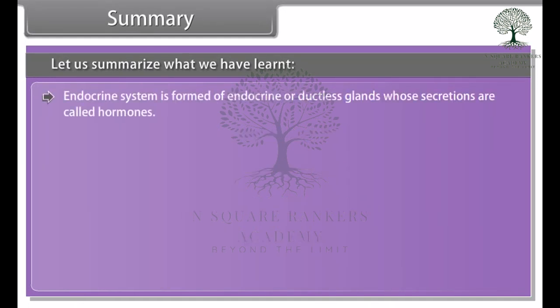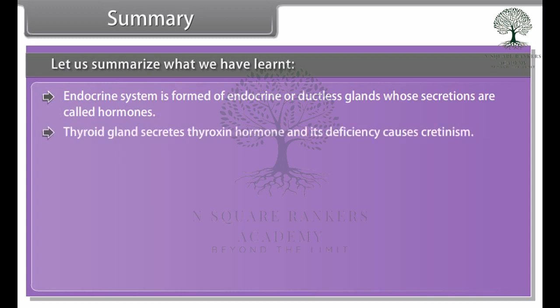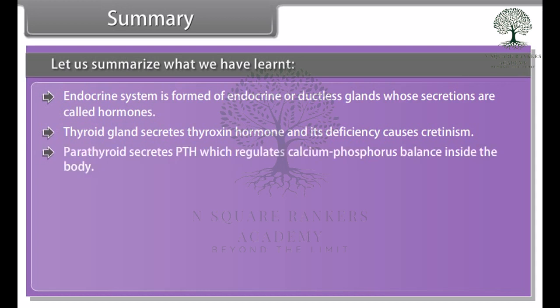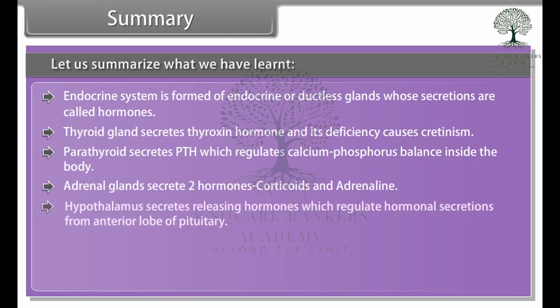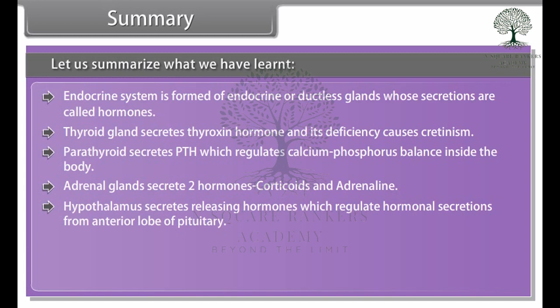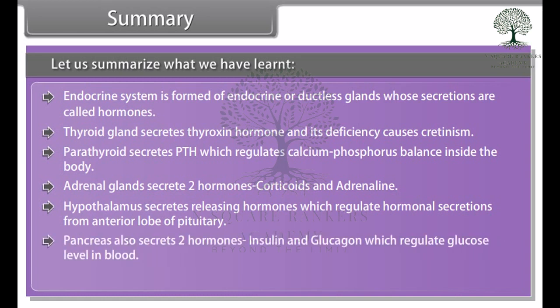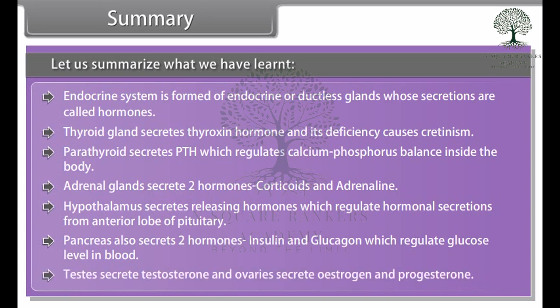The endocrine system is formed of endocrine or ductless glands whose secretions are called hormones. The thyroid gland secretes thyroxine hormone and its deficiency causes cretinism. Parathyroid secretes PTH, which regulates calcium-phosphorus balance inside the body. Adrenal glands secrete two hormones: corticoids and adrenaline. The hypothalamus secretes releasing hormones which regulate hormonal secretions from the anterior lobe of the pituitary. The pancreas secretes two hormones, insulin and glucagon, which regulate glucose level in blood. The testes secrete testosterone and the ovaries secrete estrogen and progesterone.